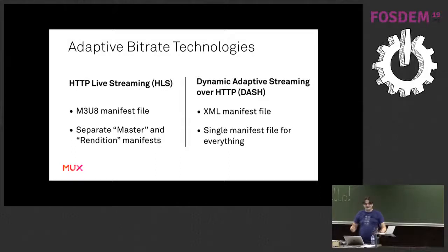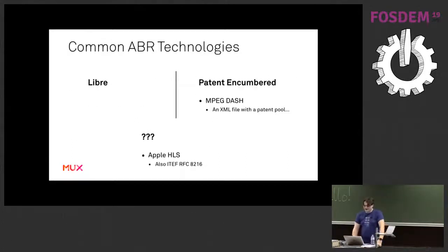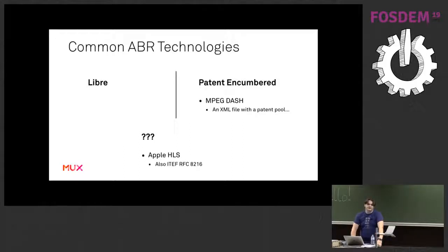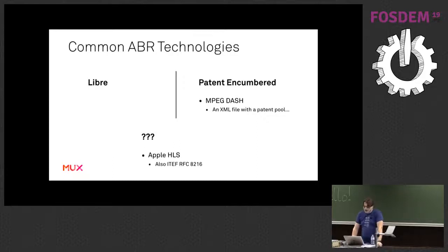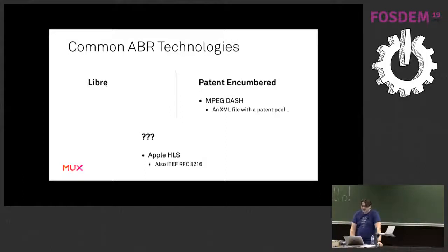I didn't immediately put HLS and DASH on my Libre-to-patent-encumbered scale, because it's really interesting. DASH is an MPEG protocol, so it's pretty much a non-starter - it actually has a patent pool; it's an XML file with a patent pool associated with it. Some MPEG people will tell you not to worry about that, but it's not going to stop people coming and trying to charge you a fee or suing you. HLS is an Apple protocol, developed by Roger Pantos out of Apple, developed basically completely behind closed doors. Any extensions or variations of it - you're on your own, with very little control.